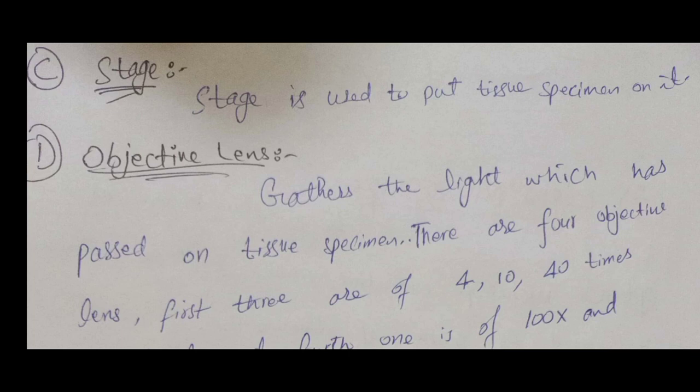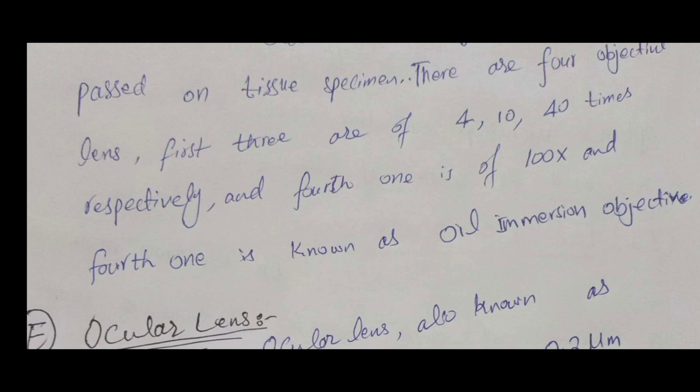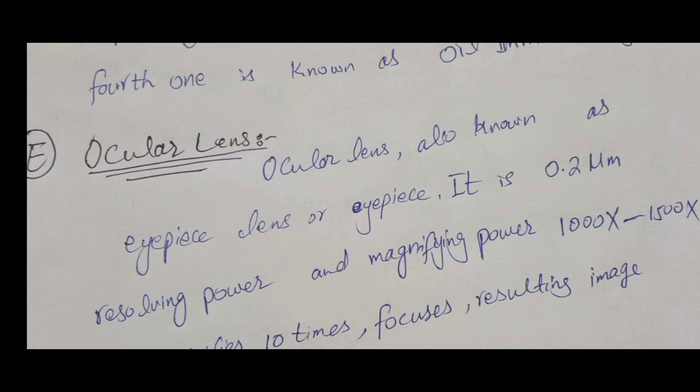There are four objective lenses in the microscope. The first three have magnification powers of 4x, 10x, and 40x, and the fourth one has a magnification power of 100x. The fourth one is known as the oil immersion objective lens. The fifth part is the ocular lens, also known as the eyepiece.